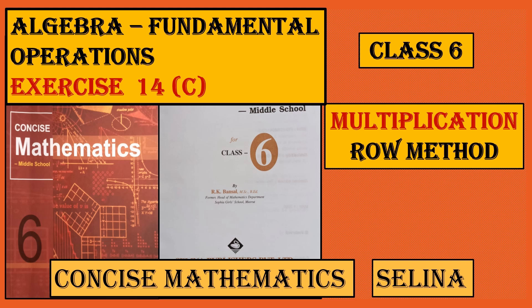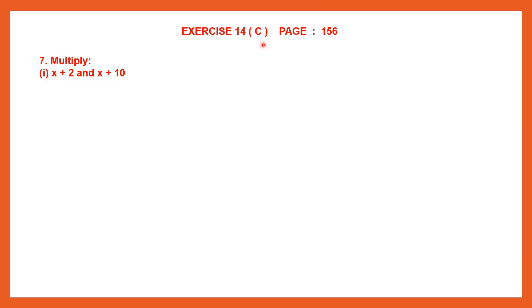Hello students. Let's do algebra fundamental operations exercise 14c, multiplication by the row method. Page number 156 and we are with question 7. Here we are going to multiply one binomial with another binomial.